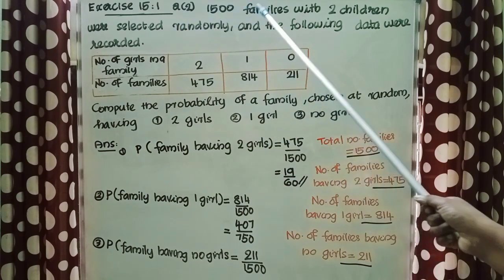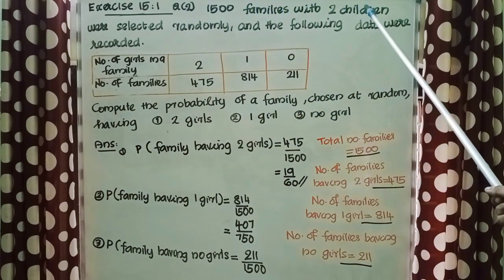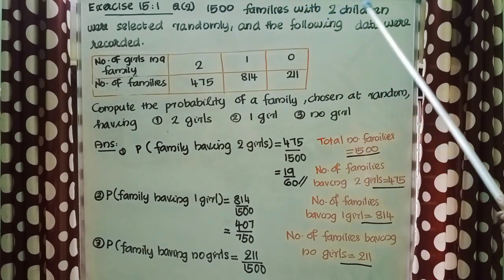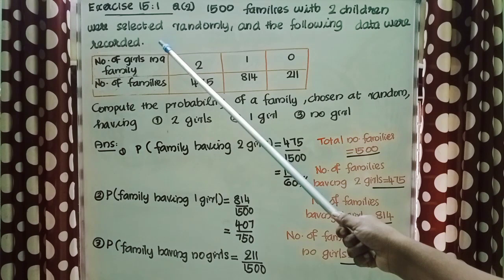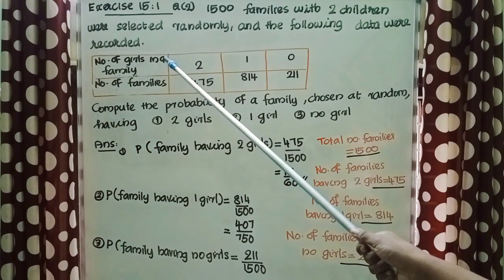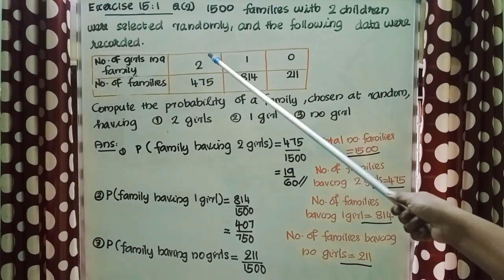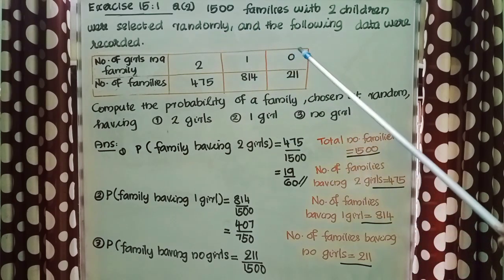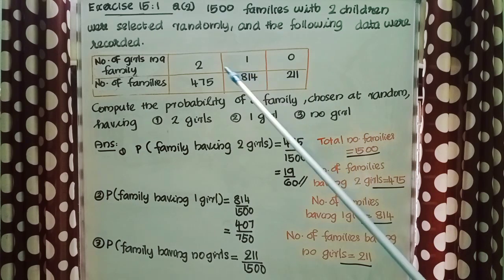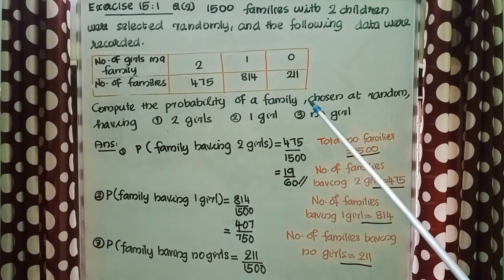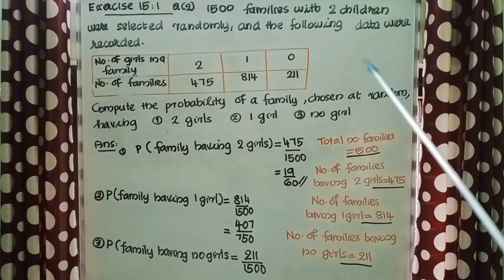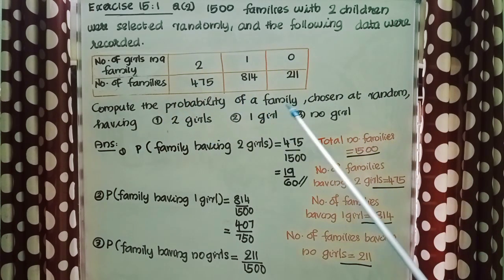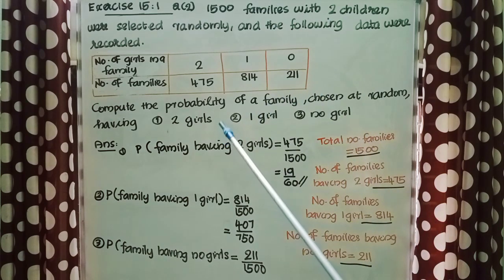1,500 families with 2 children were selected randomly and the following data were recorded. Number of girls in a family: 2 — 475 families; 1 — 814 families; 0 — 211 families. Compute the probability of a family chosen at random having 2 girls, 1 girl, and no girl.